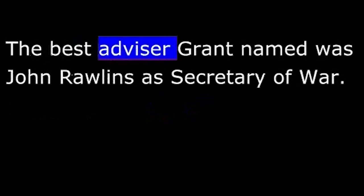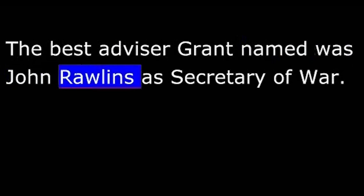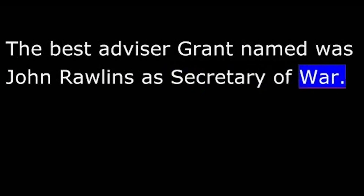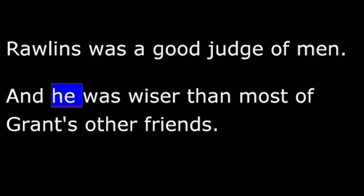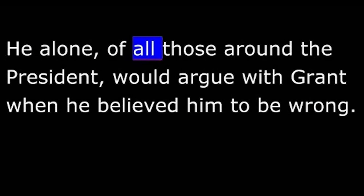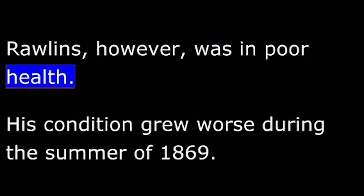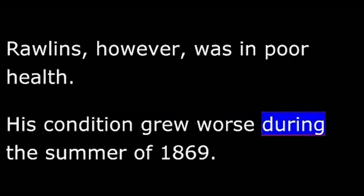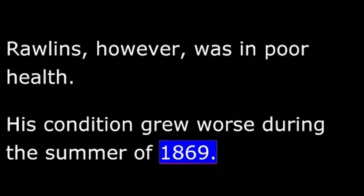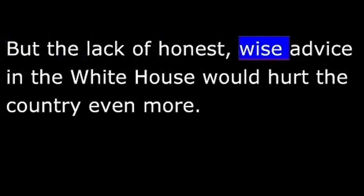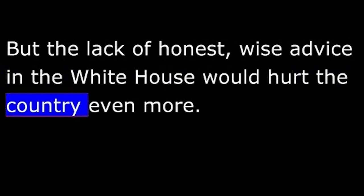The best advisor Grant named was John Rawlins as Secretary of War. Rawlins was a good judge of men, and he was wiser than most of Grant's other friends. He alone, of all those around the president, would argue with Grant when he believed him to be wrong. Rawlins, however, was in poor health. His condition grew worse during the summer of 1869. Early in autumn, he died. Rawlins' death hurt President Grant deeply. But the lack of honest, wise advice in the White House would hurt the country even more.